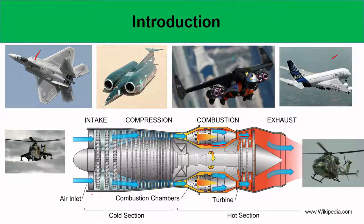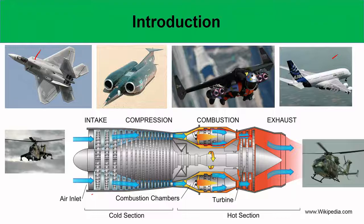The combustor occupies a relatively small section, not because it is unimportant — it is very important — but because the combustor sees the highest pressure inside the whole gas turbine engine. To extract work from a Brayton cycle, you need to add heat at high pressure. So combustion happens at very high pressure, making the combustor volume relatively small. Typical gas turbine engines consume very high mass flow rates and combustors are designed to operate at very high pressure to achieve high efficiency.